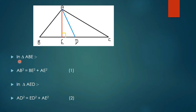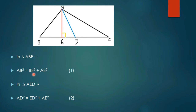Now in triangle ABE, it is a right-angled triangle, so we are using Pythagoras theorem: AB square, that is the hypotenuse, is equal to BE square plus AE square. Say that is equation 1.